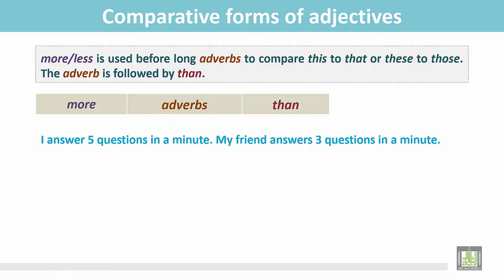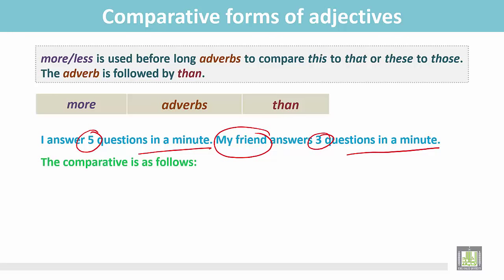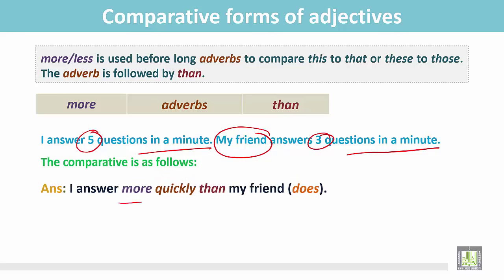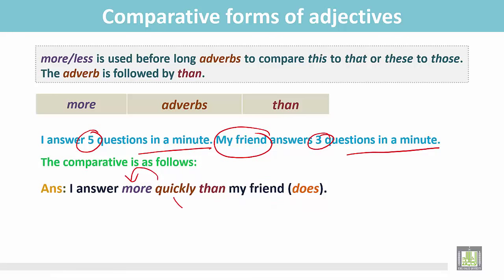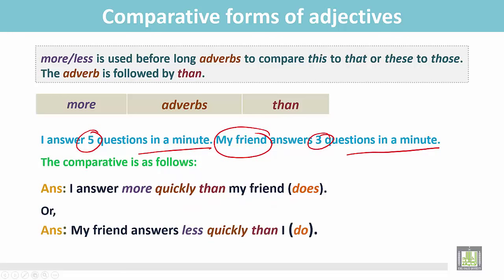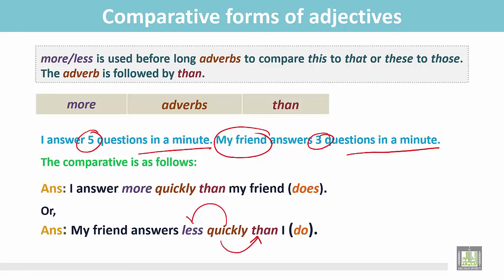See the example. I answer 5 questions in a minute, and my friend answers 3 questions in a minute. We find that I answer more questions in a minute. The comparative is: I answer more quickly than my friend does — here 'quickly' is the long adverb and we use 'more' before it, followed by 'than.' Or we can say: my friend answers less quickly than I do — here the long adverb 'quickly' is followed by 'than' and we use 'less' before it.